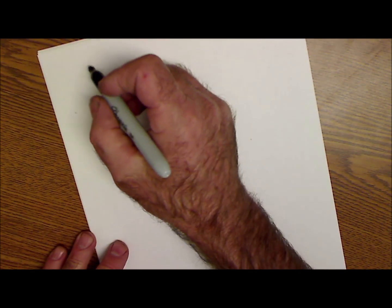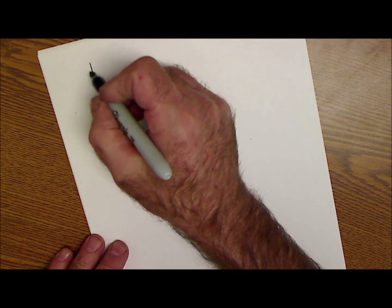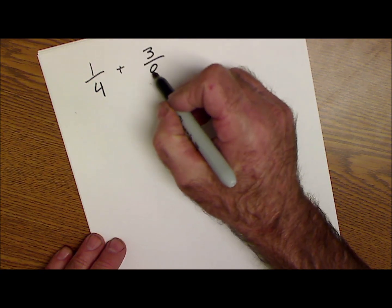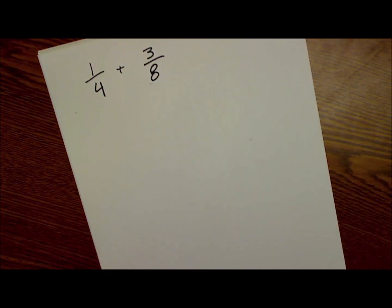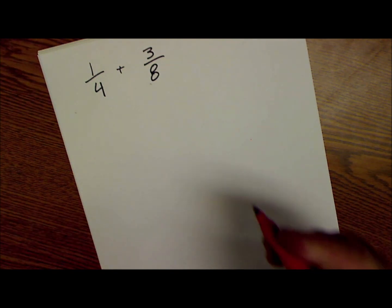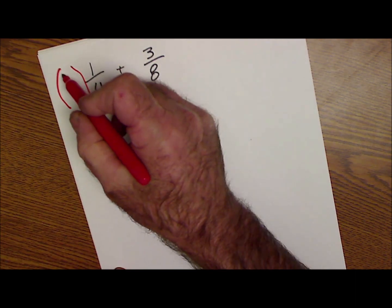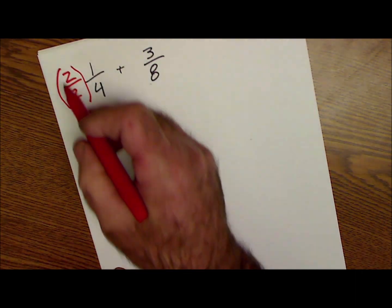Where it starts to get tricky is when the bottom number is not the same. So if I have one-fourth plus three-eighths, I can't just add across the top because I'm adding different things, so I get everything to eighths, or I got to get everything the same. So I'm going to multiply this by a factor of one. Two over two is one.